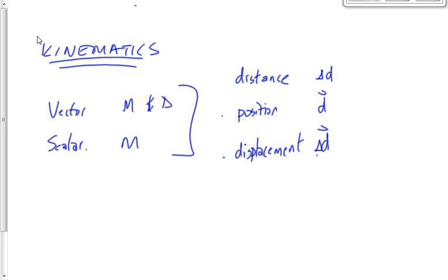Displacement is your final point relative to your initial point — your change in position. For example, if I run around the track once, my distance traveled is 400 meters, but my displacement is zero, because my initial and final position are the same.